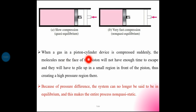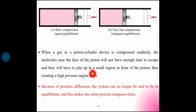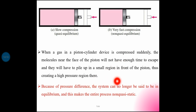When a gas in a piston-cylinder device is compressed suddenly, the molecules near the face of the piston will not have enough time to escape and they will pile up in a small region in front of the piston, creating a high pressure region there. Because of this pressure difference, the system can no longer be said to be in equilibrium, and this makes the entire process non-quasi-static.